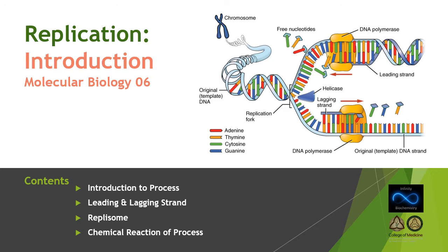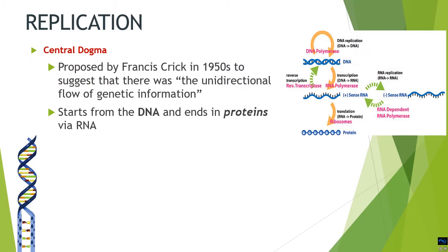To begin with the replication process, we should know certain previous concepts. The first concept which we had already covered is the central dogma, which was proposed by Francis Crick. It mentions that there is a unidirectional flow of information, which was later modified and now encompasses all the processes — whether DNA synthesizes RNA or backwards also.